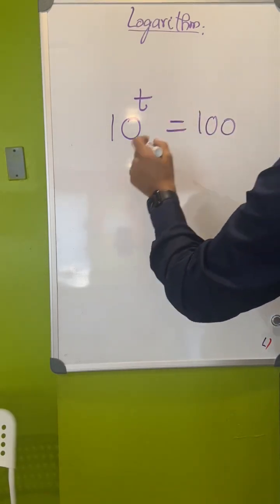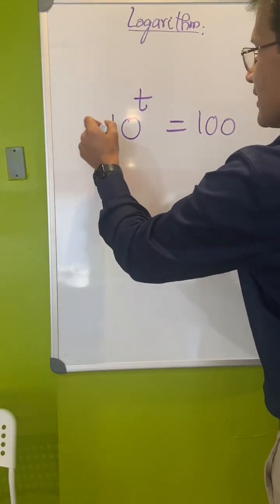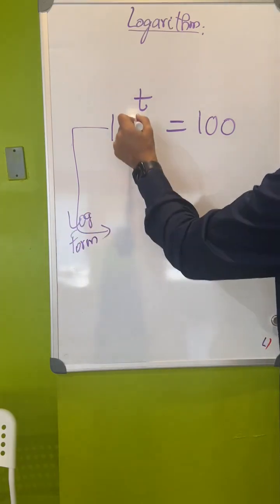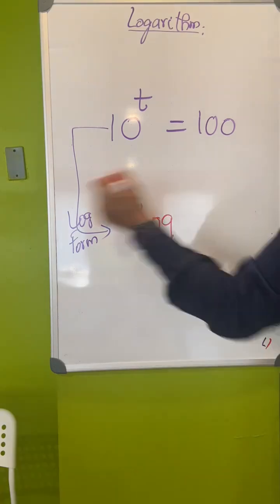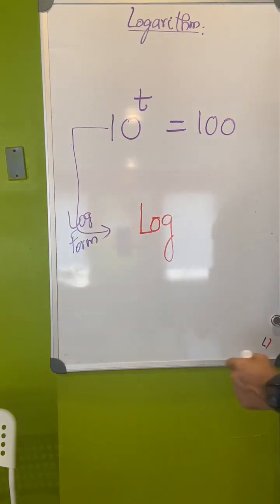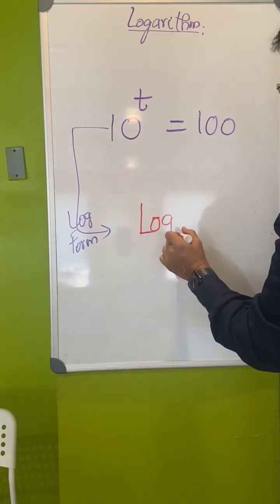So what is the base in this? This is the exponent form, now we are in log form. What is base here? Base is 10. So first you write log. When it's the log form, there will be a log word here. So log, what is base here? 10.